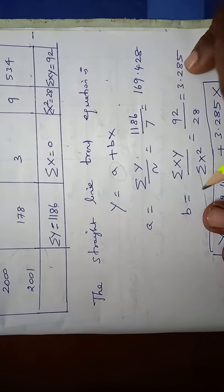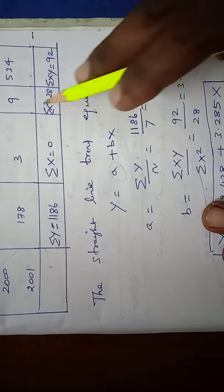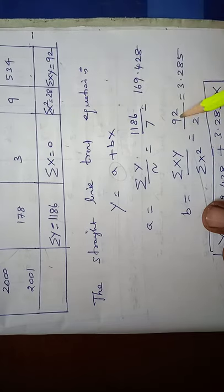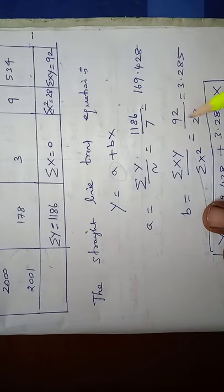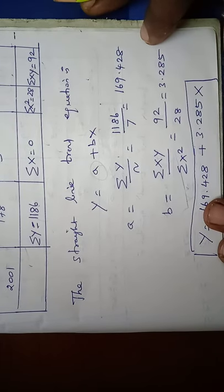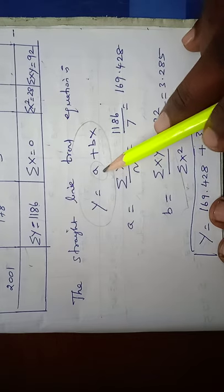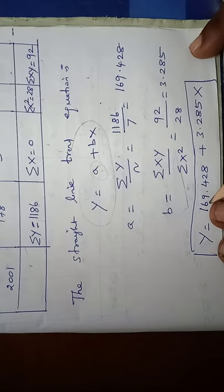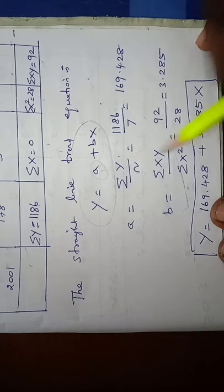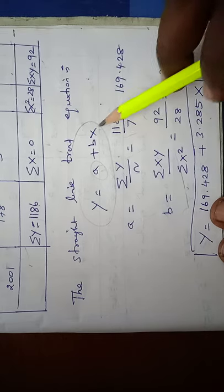And the next value, B formula is sigma XY by sigma X square. So sigma XY is 92. 92 by sigma X square value is 28. So 92 by 28 is equal to 3.285. Finally, the straight line trend equation is Y equal to 169.428 plus 3.285 into X. So this is the straight line trend equation.